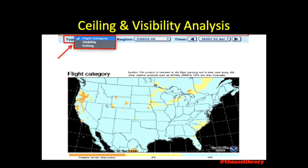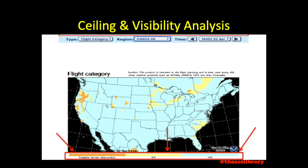The flight category, visibility, and ceiling overlays found under the type tab on this bottom map are all depicted in the same manner as the top map, but with blue shading where there was no shading up above. If accessed through AviationWeather.gov, there is always a key underneath, so there is no need to memorize what each color means.